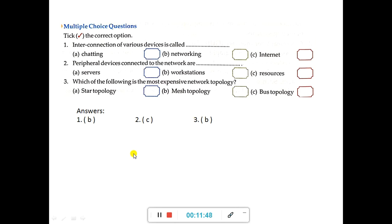Next multiple choice questions: interconnection of various devices is called networking. Peripheral devices connected to the network are called resources — not workstations. Workstations are the computers, while peripheral devices like printers are referred to as resources in the network. Which of the following is the most expensive network topology? Mesh topology.